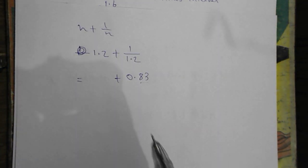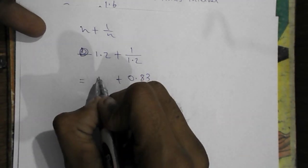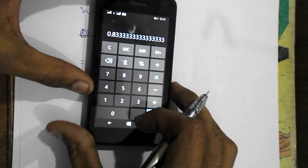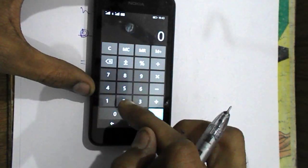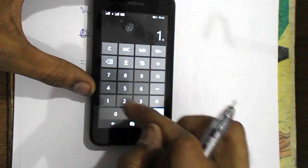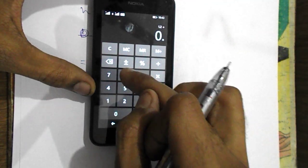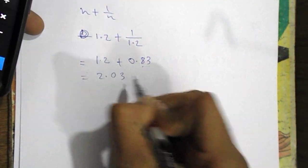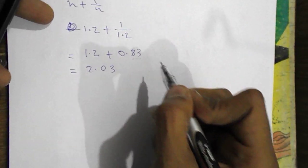We don't have to take lots of threes. And after that, we will add the both. So our answer is 1.2 plus 0.83, 2.03.